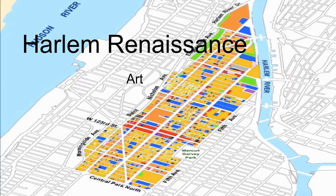Today we will be discussing our third activity on the Harlem Renaissance unit, which is art in the Harlem Renaissance. This activity will be based around the study of four artists who had a severe impact on the Harlem Renaissance. In the background slide I did add a district layout of Harlem just to provide some geographical context for the lesson.